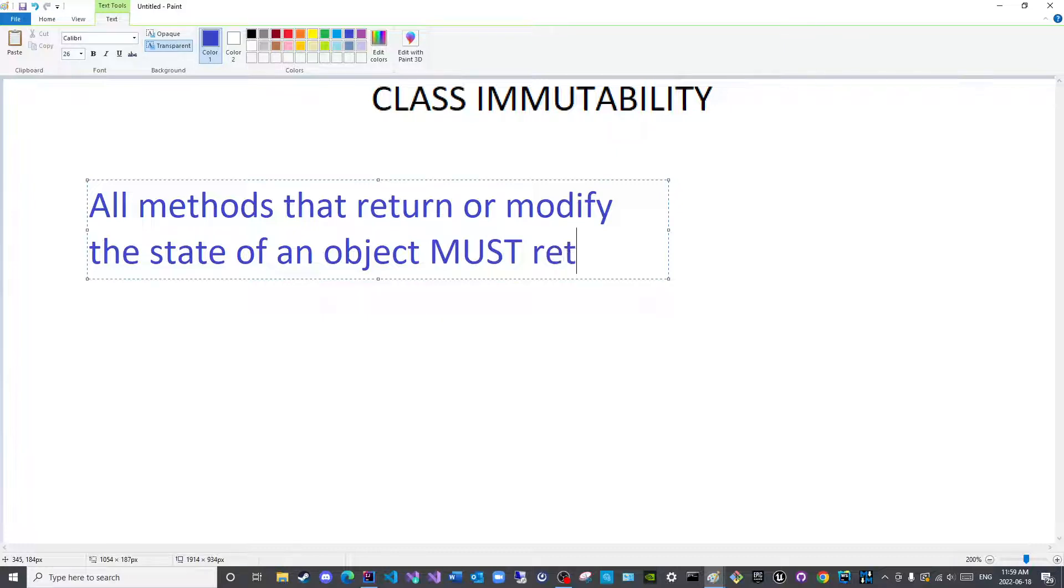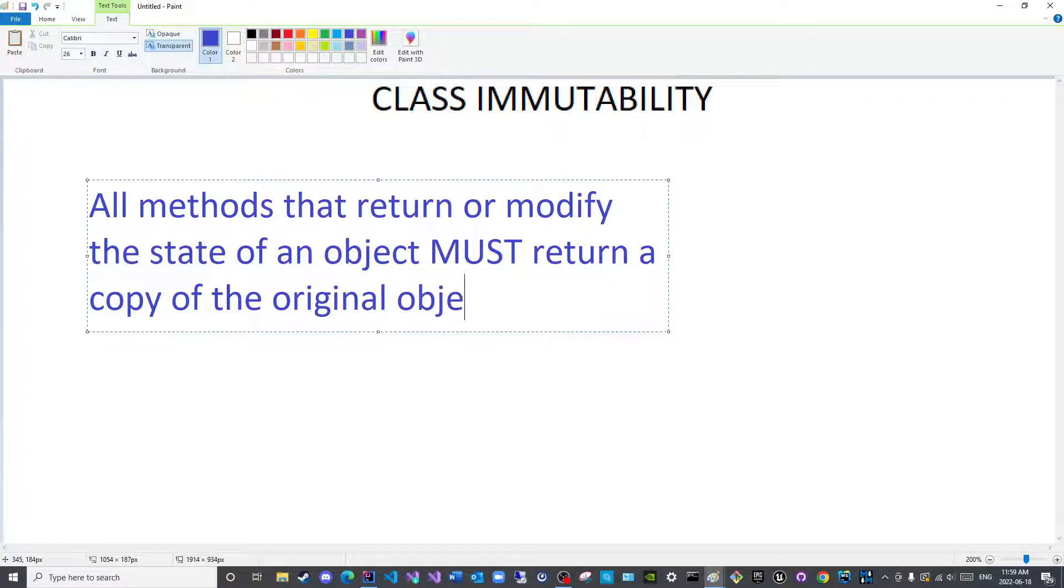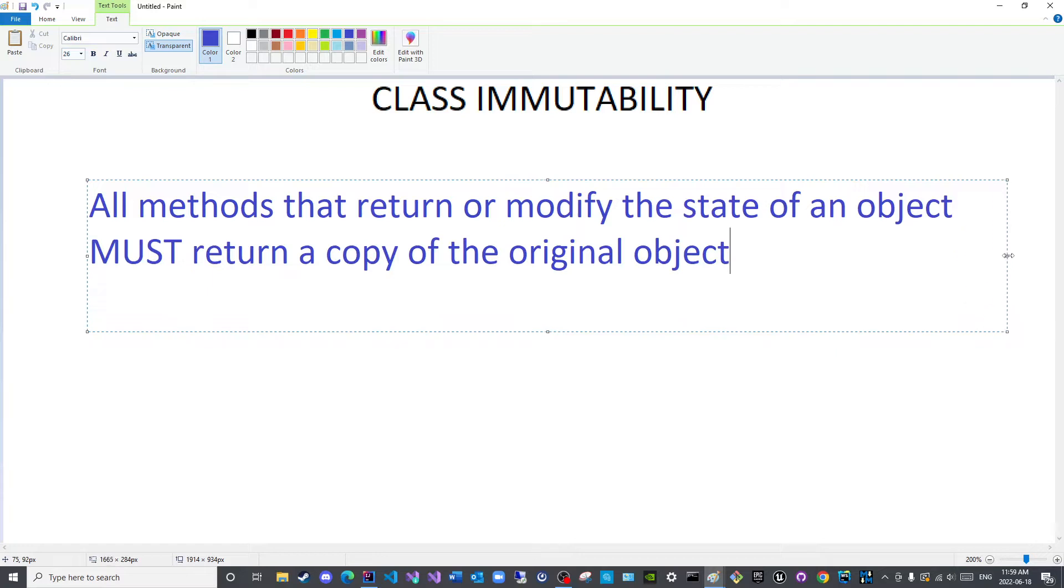These methods must return a copy of the original object. So it does not necessarily have to be a getter, it could be another method that is not a getter but does return an object.